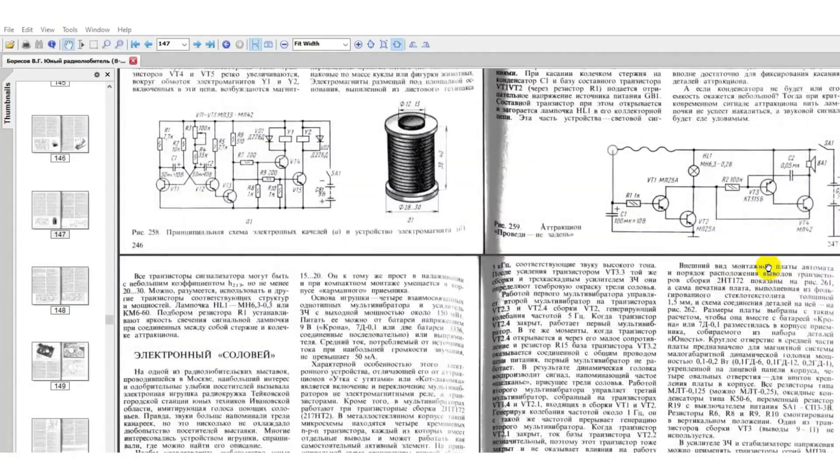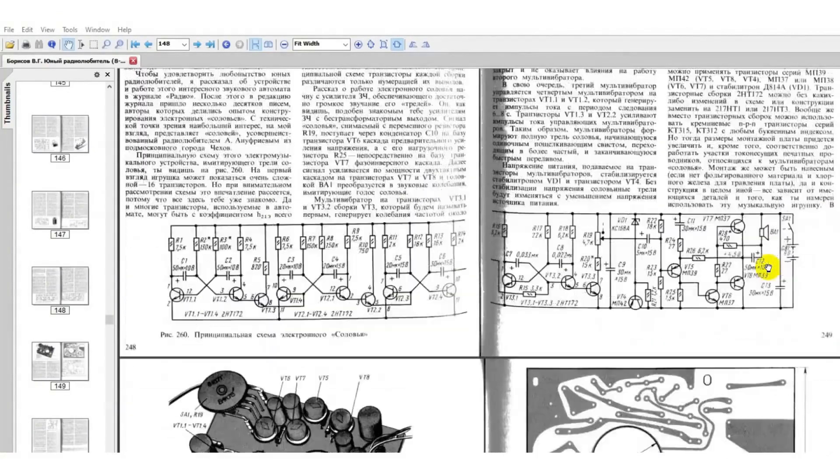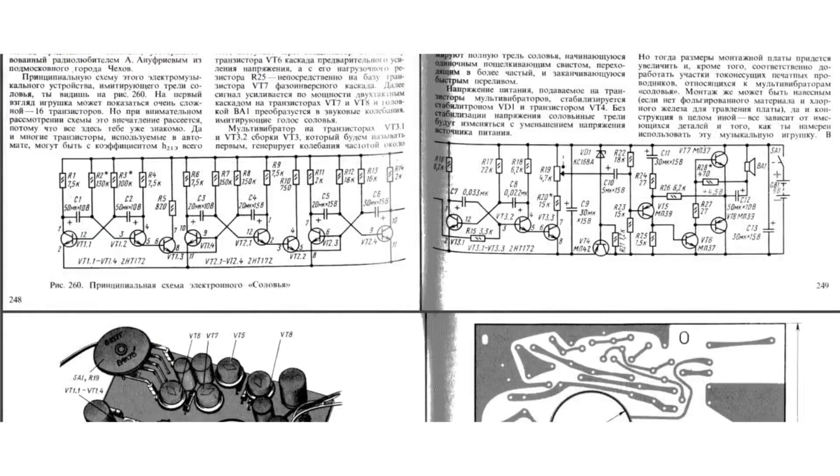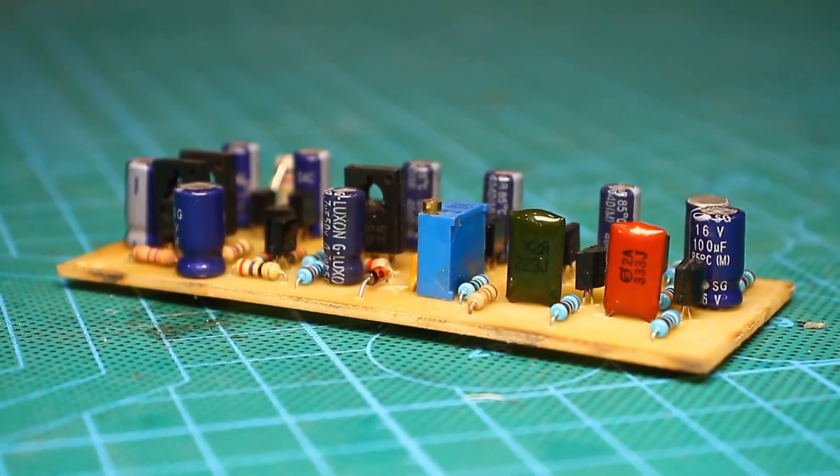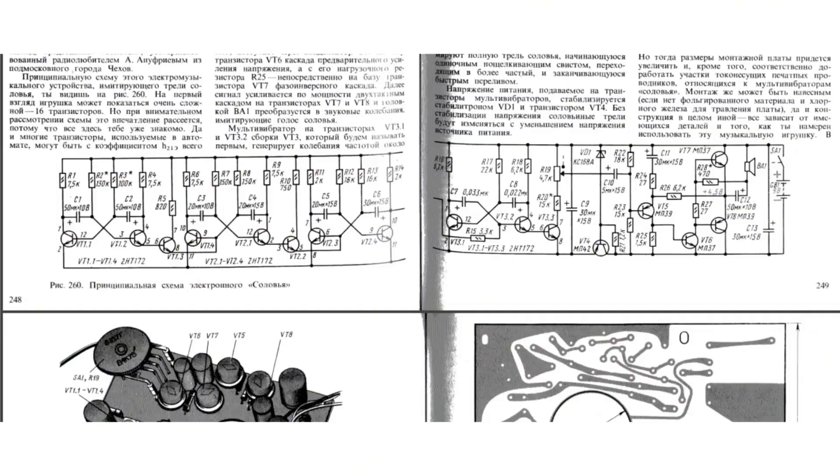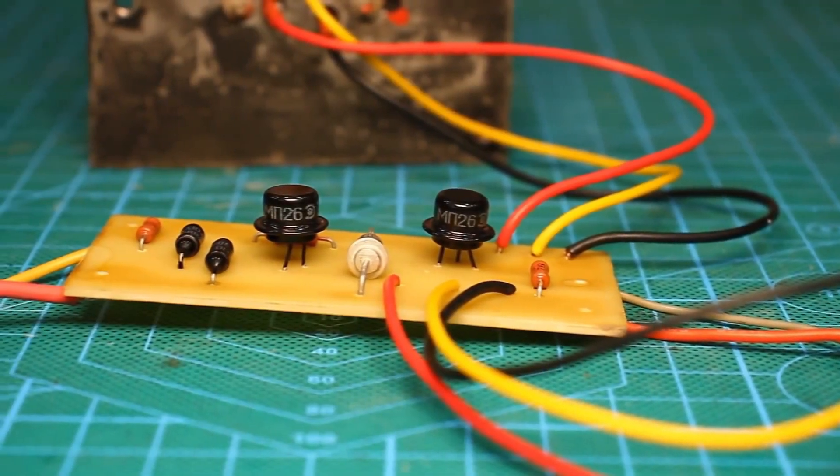The first circuit was published in the Radio Enthusiast's Bible in Borisov's book, Young Radio Enthusiast, 8th edition, 1992, page 248, although it can also be found in earlier editions. It's an electronic nightingale which can be used as a doorbell or a security alarm. I know you might have questions about the complexity, as this thing contains almost 60 components.